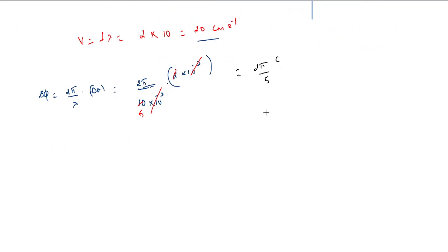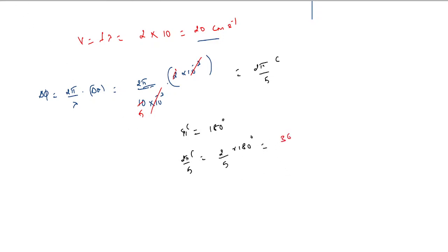So the phase difference is 2π/5 radians. If the answer is asked in terms of angle, since π radians = 180°, then 2π/5 = (2/5) × 180° = 72°. So the phase difference is 2π/5 radians or 72 degrees.